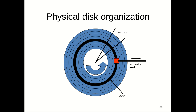Next we will discuss the magnetic disk — physical disk organization with respect to data storage. A magnetic disk is a circular platter of plastic coated with magnetizable material. The disks are mounted on a rotating drive so that the magnetized surface moves in close proximity to the read and write heads. The disks rotate at a uniform speed, and each head consists of a magnetic point or magnetic coil.